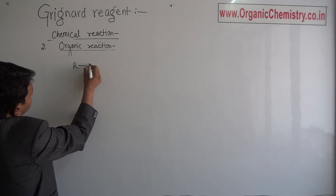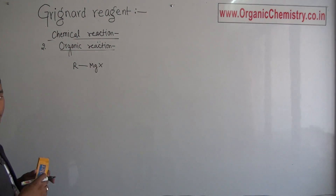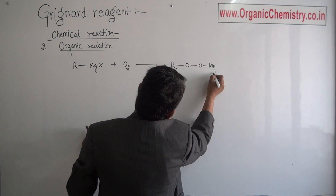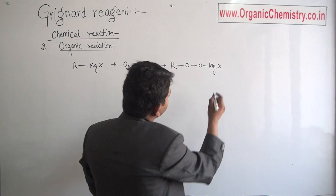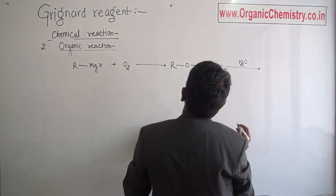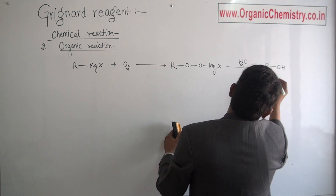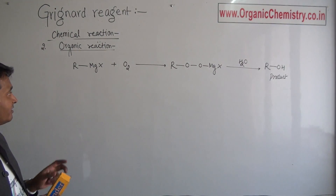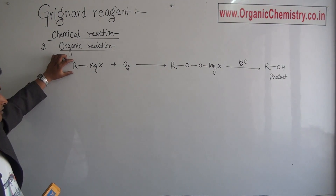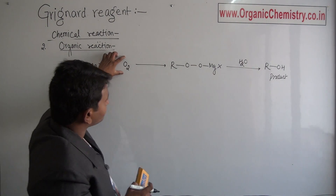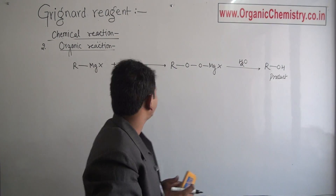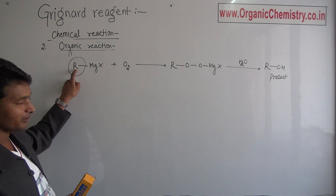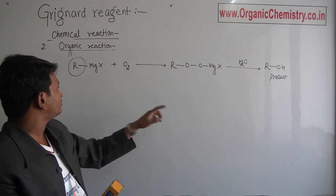Reaction with oxygen: the Grignard reagent, when reacted with oxygen, gives a peroxide intermediate (R-O-O-MgX). When water is added to the system, finally R-OH is obtained as a product. The mechanism of this reaction is uncertain, so I am not writing the mechanism. It is important to note that when Grignard reacts with oxygen followed by water, alcohol is obtained. We only attach one -OH to this R group, whether R is single-bonded or double-bonded.